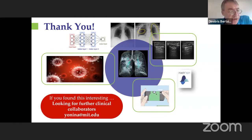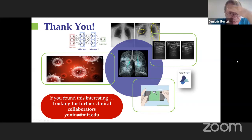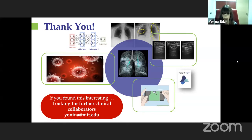Thank you, Yonina. We have time for some questions. By how much, percentage-wise, did you have to increase data volumes through augmentation and segmentation to get these results? We found that around a factor of two to three — more like two — was sufficient. We ended up increasing more than that because we wanted robustness to variations that the radiologist stressed the algorithm should be insensitive to. We applied about four or five different augmentations, each with a certain probability, increasing the dataset by roughly a factor of three.